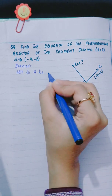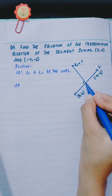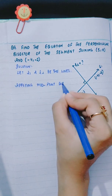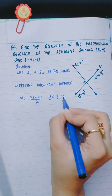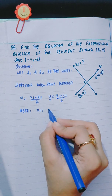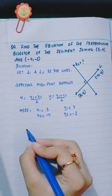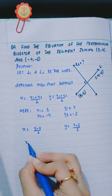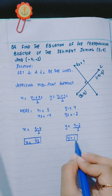Let L1 and L2 be the lines. First we will find this point, so we apply the midpoint formula: X is equal to X1 plus X2 divided by 2, and Y is equal to Y1 plus Y2 divided by 2. Here X1 is 5, Y1 is 4, X2 is minus 4, and Y2 is minus 2. So X is equal to 5 minus 4 divided by 2, giving 1 by 2, and Y is equal to 4 minus 2 divided by 2, giving 1.